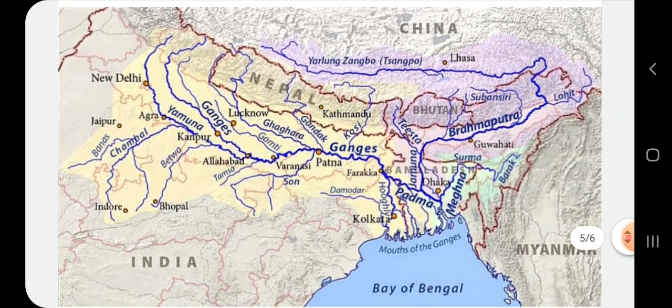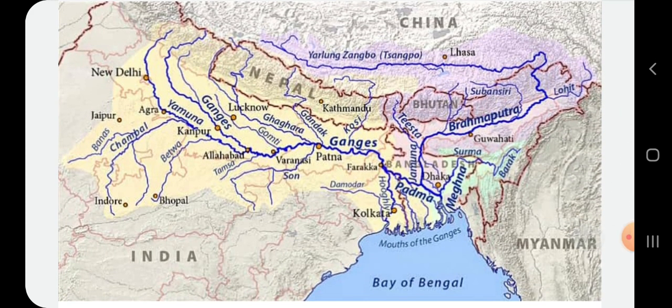Now we come to the next topic: the Brahmaputra Basin. This basin is surrounded on three sides by hills and mountains. The Garo Hills, the Khasi-Jaintia Hills and the Naga Hills are to the south of this basin. These are in the eastern part of the Northern Fertile Plains.